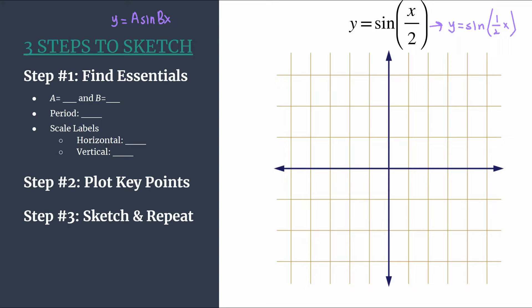In step one, we're finding our essential information. We see a is an understood 1. There's nothing in front of the sine, so we understand the coefficient there is 1. That means our amplitude is 1, and we see clearly now b is 1 half.